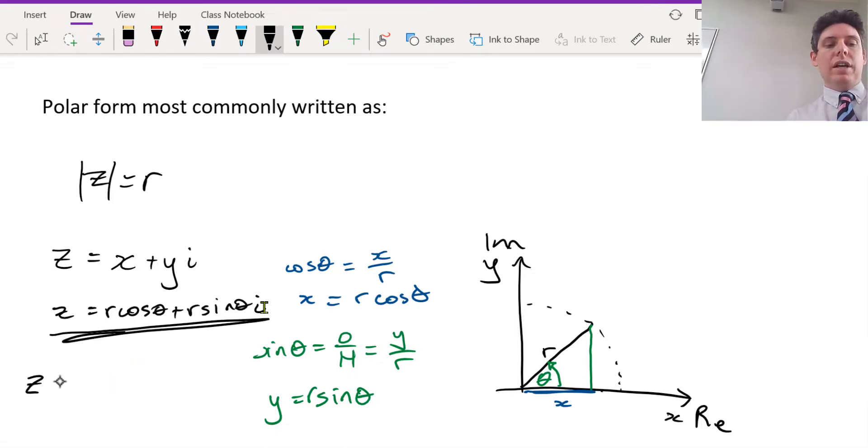But it's often called cis form. Because mathematicians want to shorten stuff, they don't want to write the full cos r sine. They just write it as cos, c represents the cos bit, sine represents the s bit.